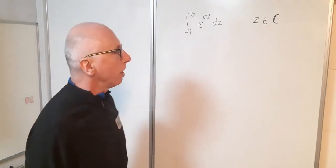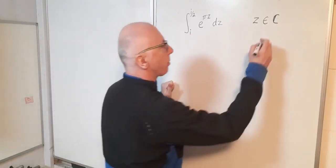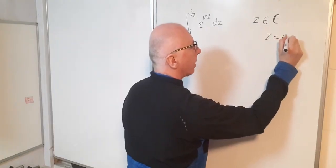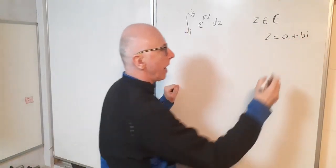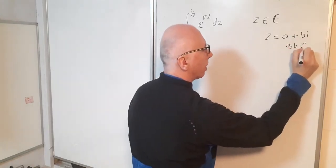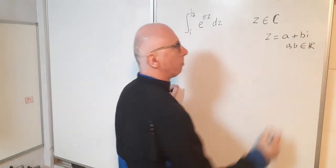Now z is a complex number. We can represent that in three ways: a plus bi, that's one way where a and b are real numbers.